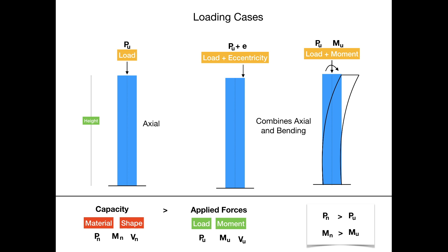In the second case of combined axial and bending, there could be two possibilities. The first possibility is that the load is applied at an eccentricity, and the second is that the load is applied along with a moment. Both these cases will result in combined axial deformation and also cause the column to bend. In the first case we are mostly concerned about the nominal load capacity — the compressive load capacity of the column — and in the second case we are also concerned about the moment-taking capacity of our column.